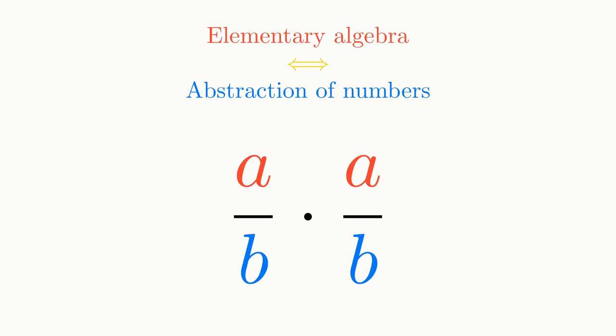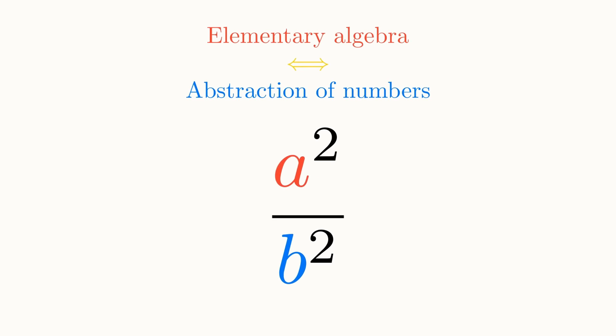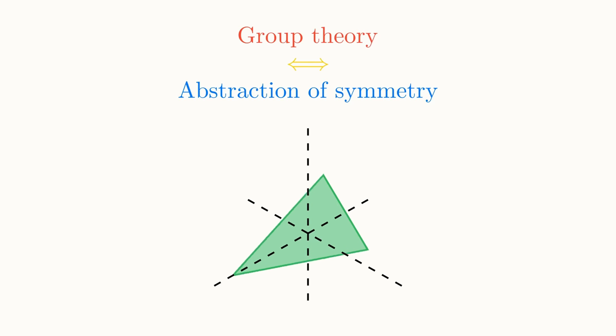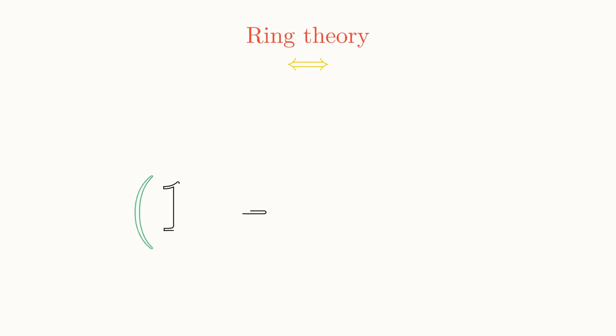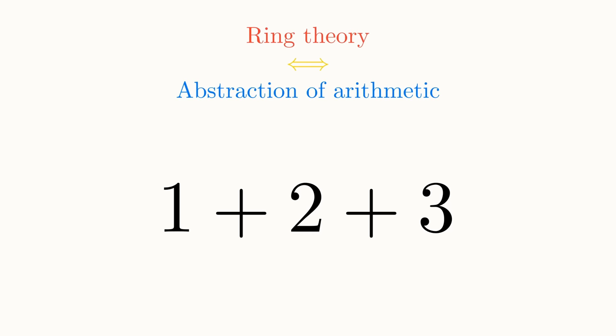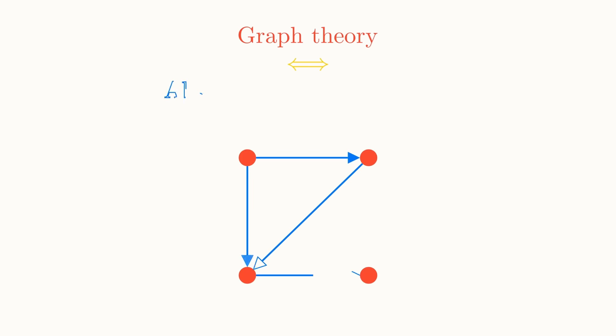Now that we've seen that the familiar elementary algebra is secretly the study of abstraction of numbers, it can be an enlightening exercise to see how other areas of mathematics are rooted in abstraction. To outline a few, it can be appreciated that group theory is the abstraction of symmetries. Ring theory is the abstraction of basic arithmetic. And graph theory is the abstraction of relationships.